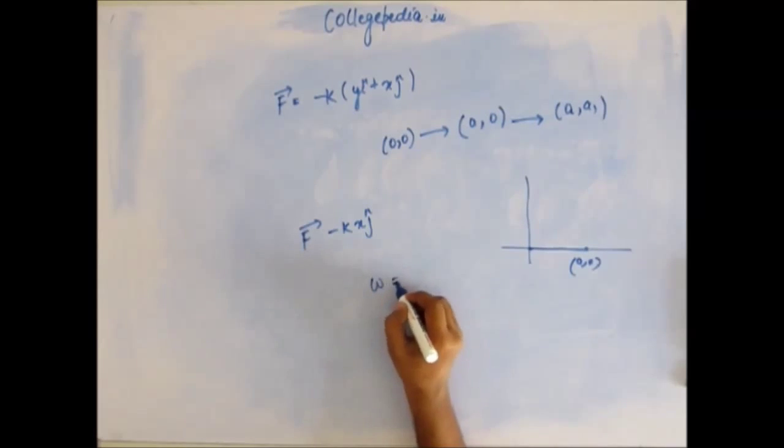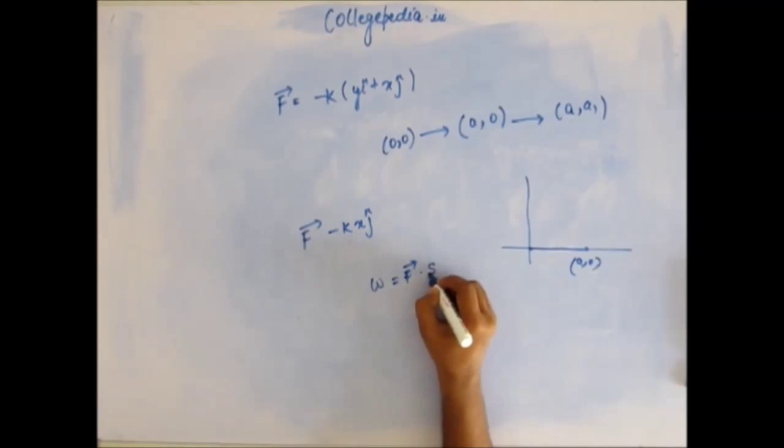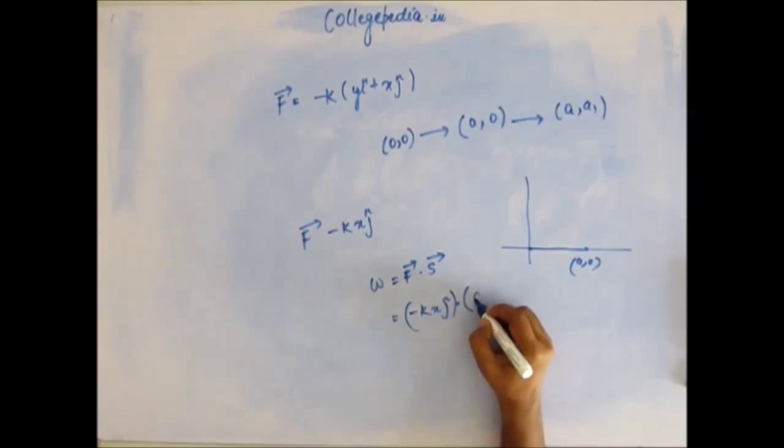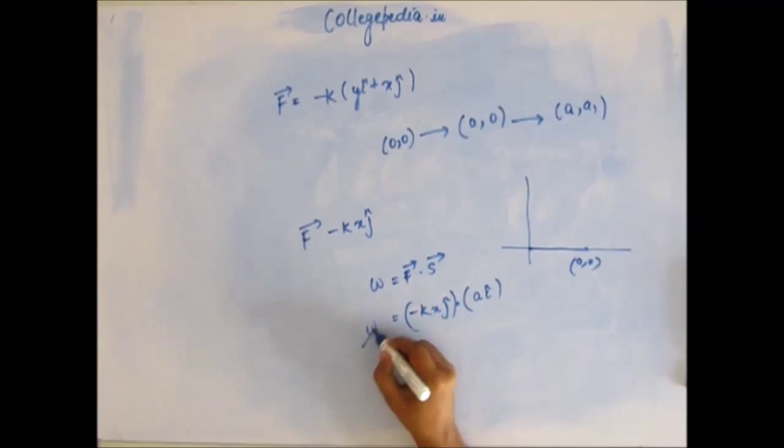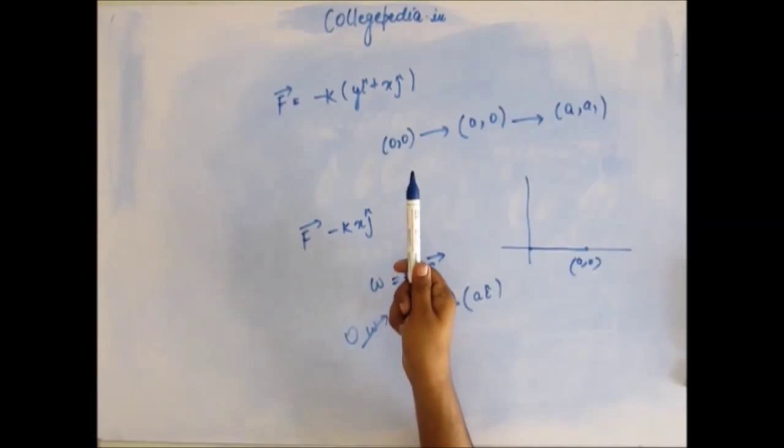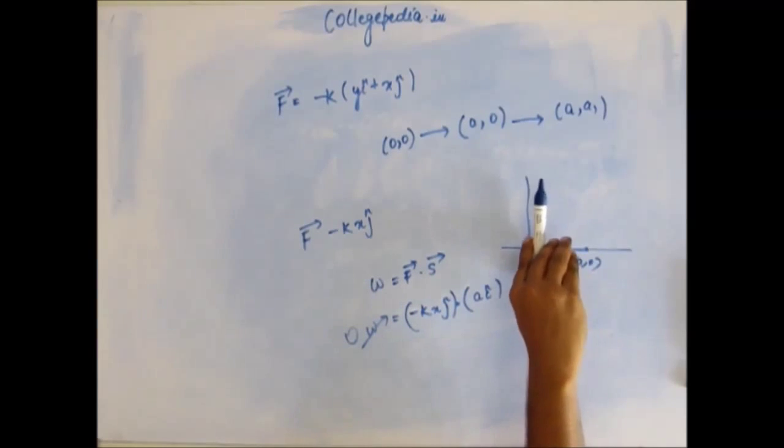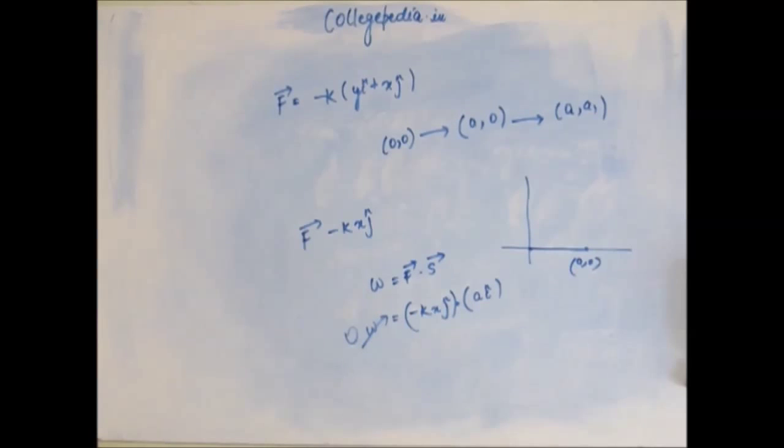So the force which is actually acting in the first half is minus k x j-cap. Work done - we have learnt only one formula: work is force vector dot displacement vector. Here, force vector is minus k x j-cap dot displacement vector. Displacement vector that has occurred here is final position minus initial position, a i-cap. j-cap into i-cap is 0. That makes the whole work done to be 0. The force all along was acting along y-axis and the displacement all along has been towards x-axis. So displacement and force have been perpendicular throughout the first half of the journey. Of course, work done is zero.